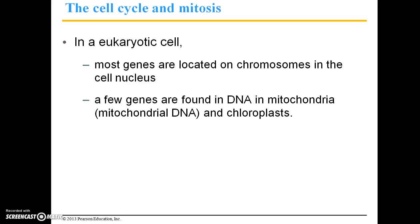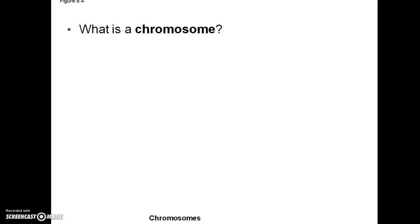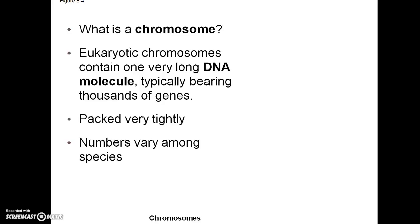In a eukaryotic cell, most genes are located on chromosomes in the cell's nucleus. A few genes are found in DNA within mitochondria — this is referred to as mitochondrial DNA — as well as chloroplasts. Eukaryotic chromosomes contain one very long DNA molecule, which typically bears thousands of genes. That strand of DNA encodes for many different genes that will have some sort of physical manifestation — they're probably going to be expressed — and there will also be some unexpressed genes in there as well.